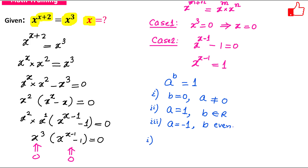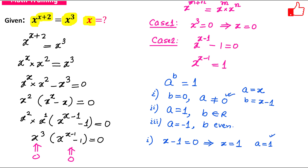First case: b equals to 0. In this case a equals to x and b equals to x minus 1. So b equals 0 means x minus 1 equals 0, which gives x equals 1. Now if x equals 1, what is the value of a? a is basically x, so a equals 1. This satisfies the condition that a is not equal to 0, and the solution is x equals 1.